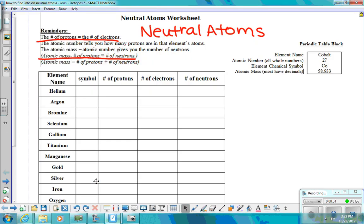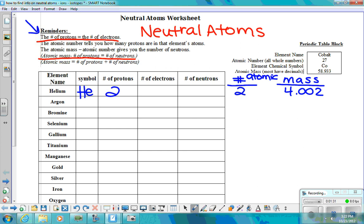When we go back to our worksheet, we know that the symbol is HE. It has an atomic number. Let's put this here for us to kind of keep our... We have to keep going back and forth. The atomic number was 2. And the atomic mass was 4.002. So how many protons do we have? The atomic number tells you how many protons are in that element's atom. If you can look up here at your reminders, it's going to tell you how to find everything. So in order to find my number of protons, I've got to look at my atomic number, which is up here. And my atomic number is 2, so I have 2 protons.